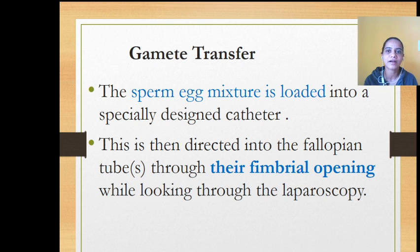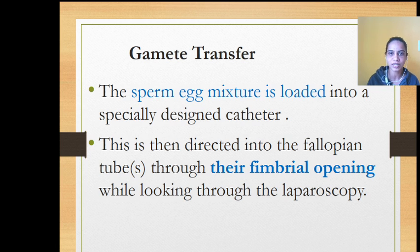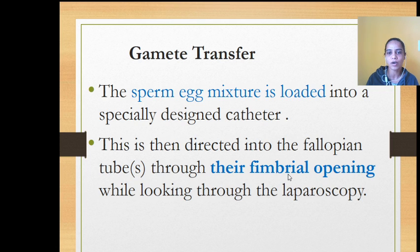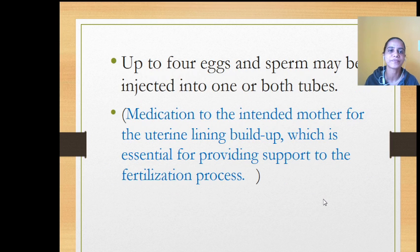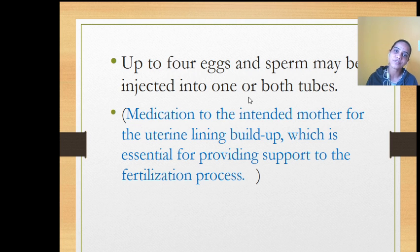Once the egg-sperm mixture is loaded, it is transferred to the fallopian tube. There is no fertilization outside — as soon as the egg and spermatozoa are mixed, the mixture is loaded into a catheter and released into the fallopian tube. This is done through the fimbriae — the finger-like projections at the opening of the fallopian tube. At the center of the fimbrial area there is a small pore called the ostium, through which the catheter is passed. Up to 4 eggs and a large number of spermatozoa are injected into one or sometimes both tubes.